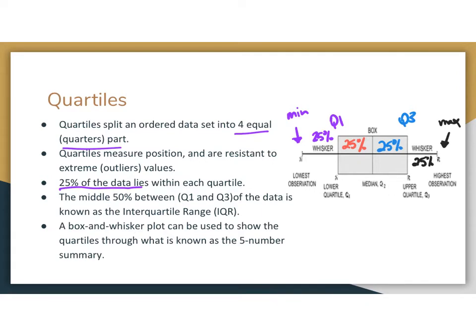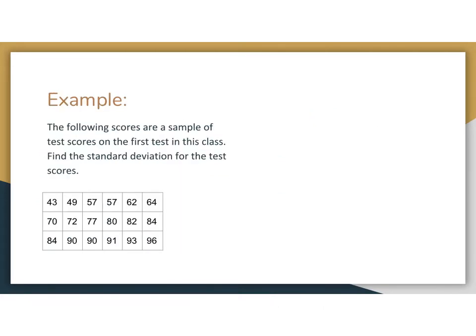The nice thing about position is that positional measures, just like the median, are resistant to extreme values, so your position won't shift a whole lot. When we start talking about skewed data sets, we're going to focus on our positional measures. These are called spread measures.